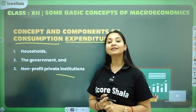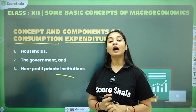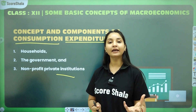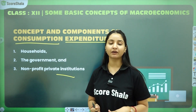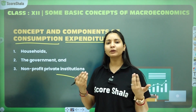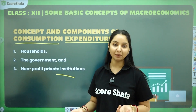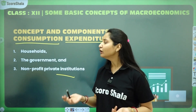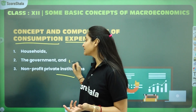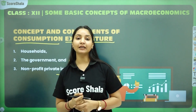Sabse pehla hota hai household, doosra hota hai government, aur teesra hota hai non-profit private institutions. Toh sabse pehla apan baat karte hai household ki. Household basically kharcha karta hai apne wants ko satisfy karne ke liye. Jo apan ne abhi tak baat kari, woh apan ne household ki baat kari hai. Household aapko easily samajh mein aa jaega - ab iski definition dekhenge, phir baat karte hai government ki.